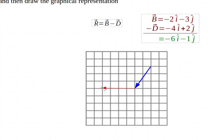If it had been D it would have gone 4 to the right and 2 down, but it goes in the exact opposite direction. So that's 4 to the left and 2 up. So there's my minus D.